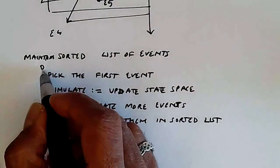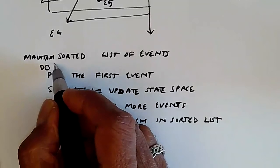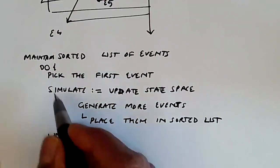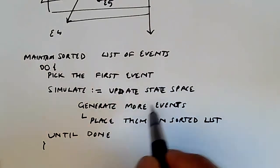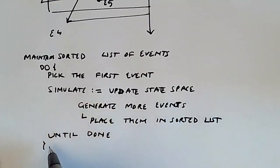So here it is: do, and in this do, we're going to say, okay, pick the first event, simulate it, generate more events, place them in the sorted list, until done. And that's it, that's the entire simulation loop.